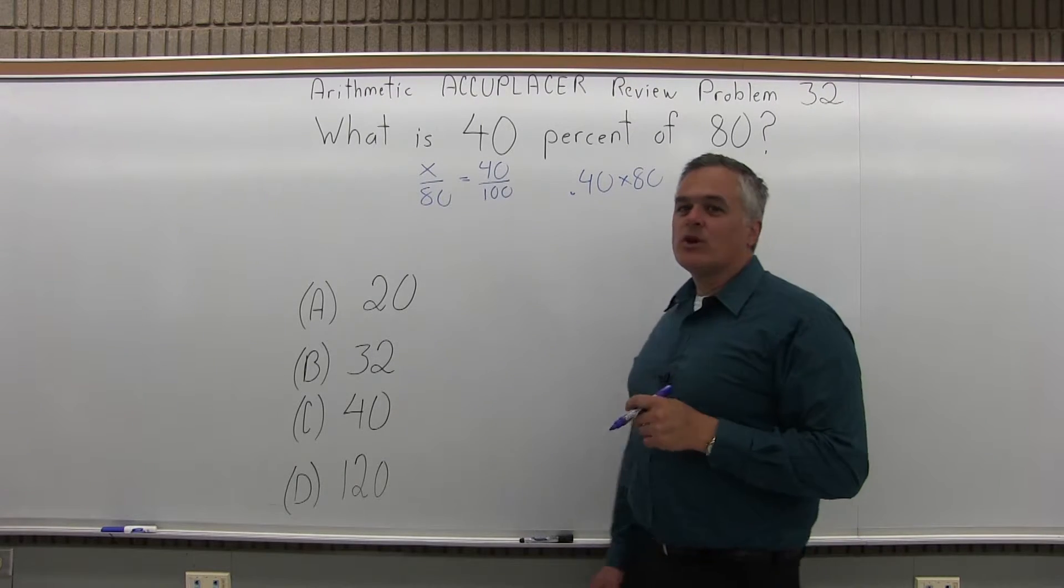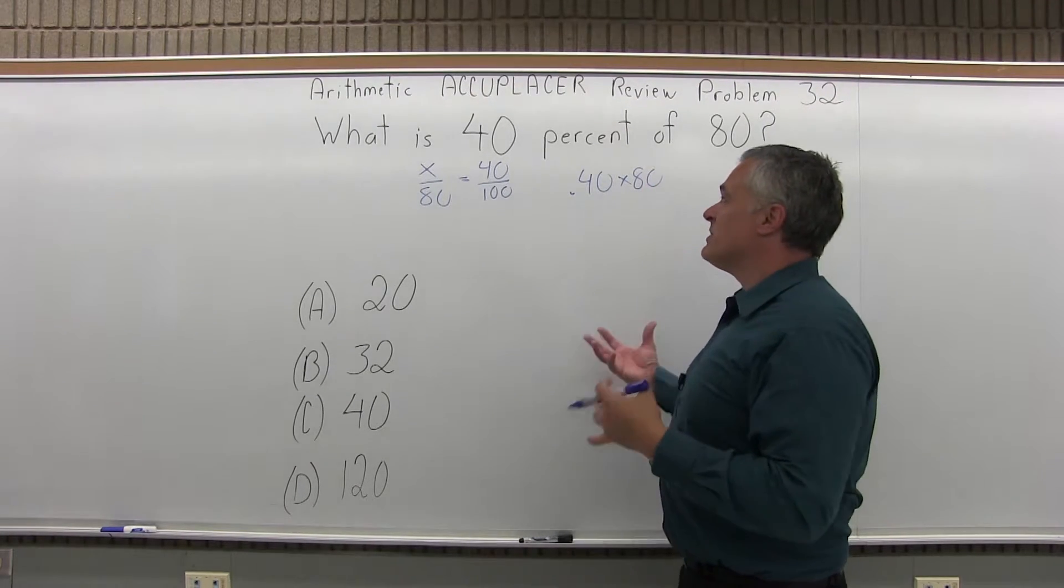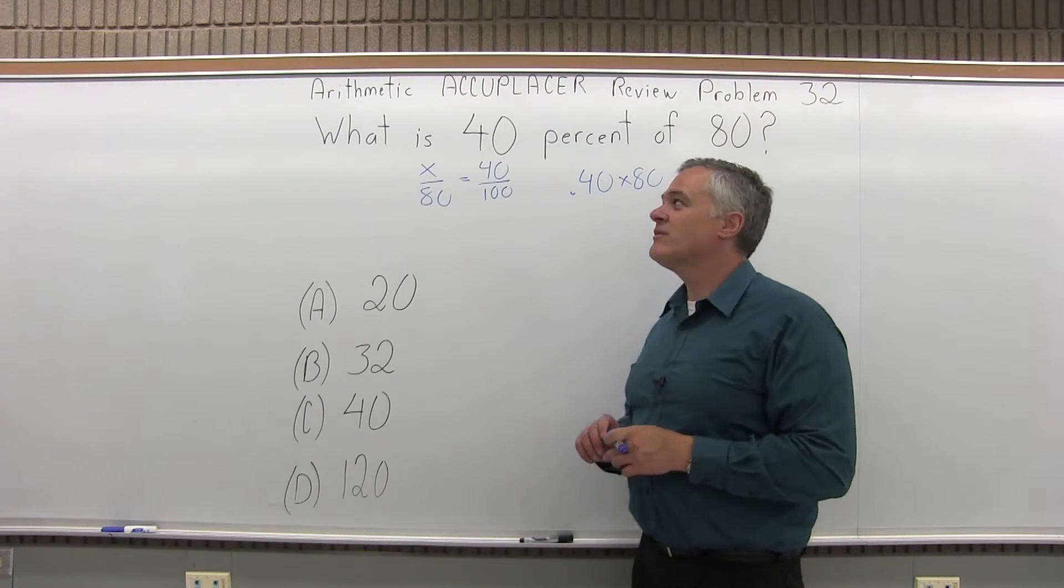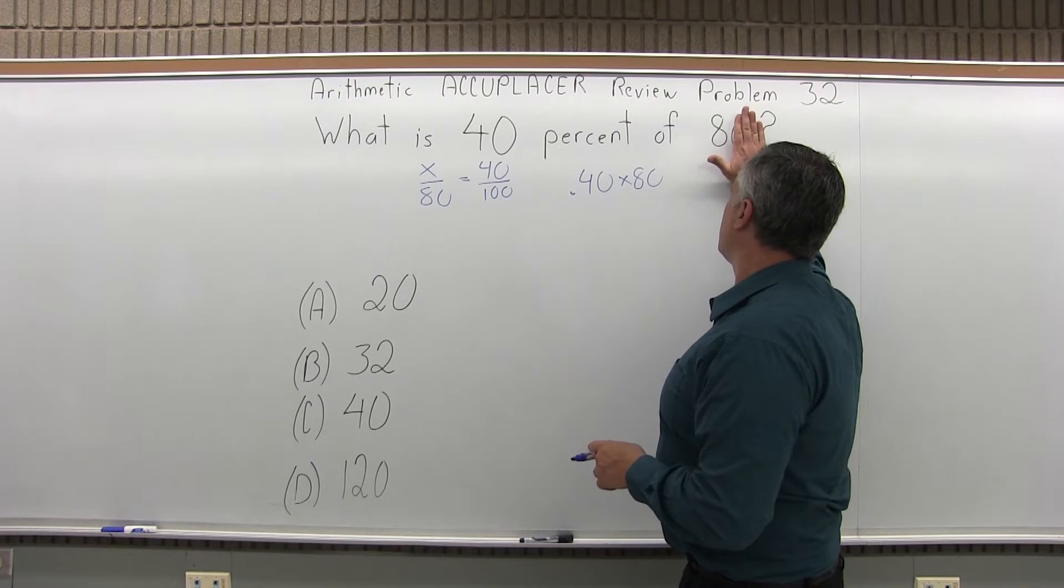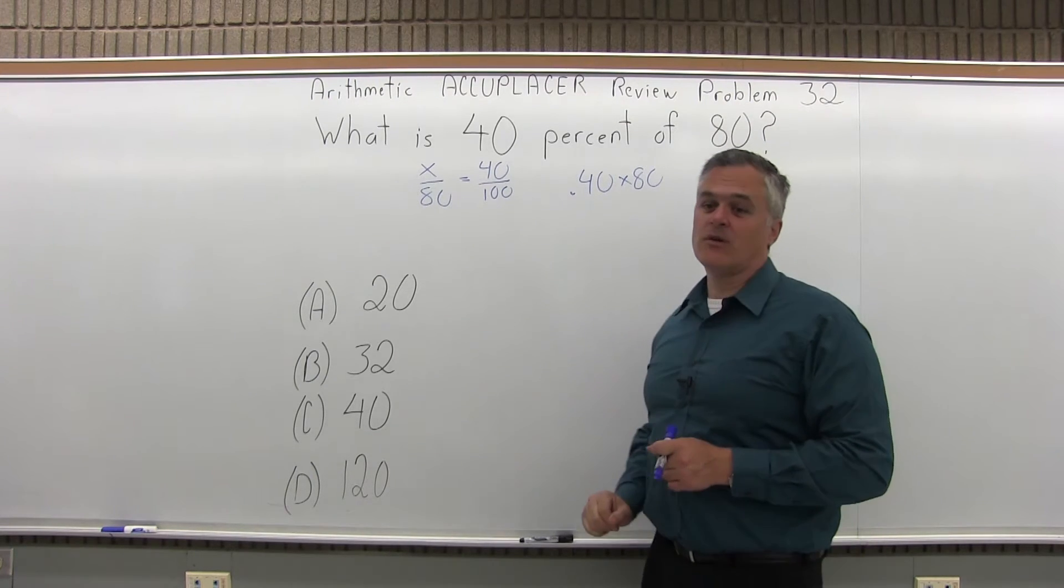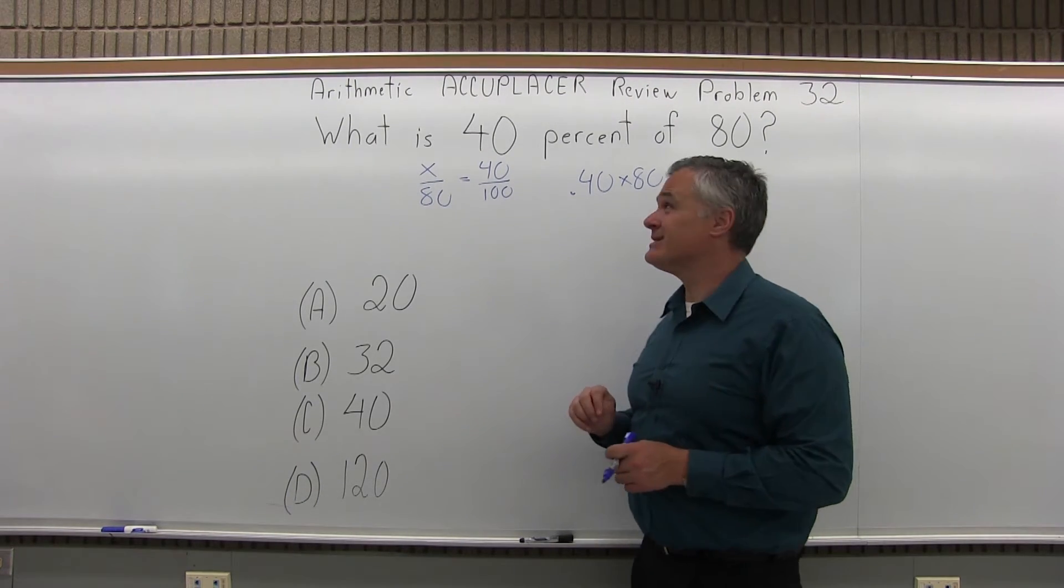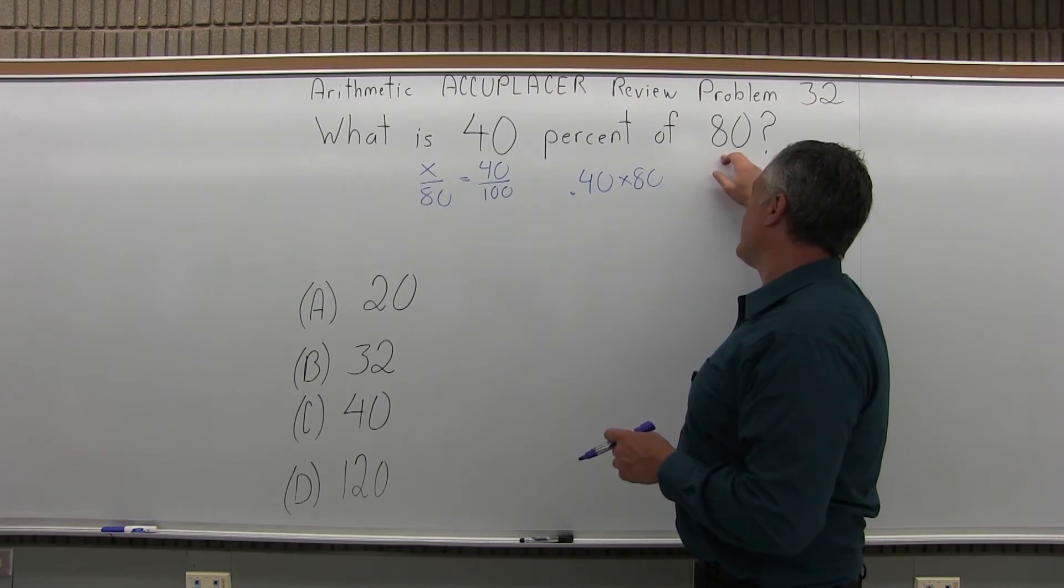The way I do it quickly that I think is the easiest, 40% is not something I think of easily off the top of my head. 1% and 10% are very easy. So 10% of 80 is very easily 8. Just get rid of the 0. So 40% is four of those 10%. So four 8s, each 10% is 8.